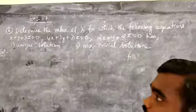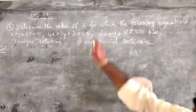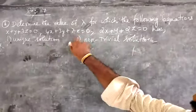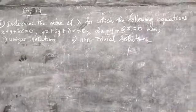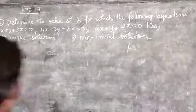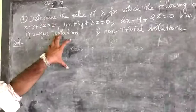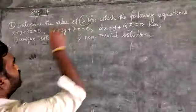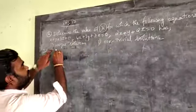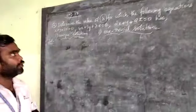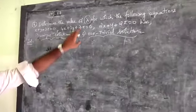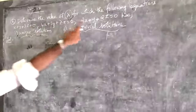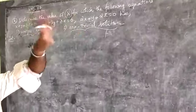Next, the important sum. Determine the value of lambda for which the following equations — three equations given in which lambda is unknown. We want to find a unique solution and a non-trivial solution. Here, unique solution is nothing but trivial only. We want to find which value of lambda gives these three equations a unique solution and a non-trivial solution.